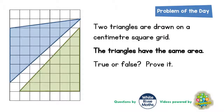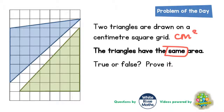Welcome problem solving fans to another problem of the day. This one is all about area of a triangle. We've got two triangles, a blue one and a green one, drawn on a centimeter square grid, so the area of each triangle is going to be in centimeters squared. The question is: do the triangles have the same area — true or false — and we've got to prove it.